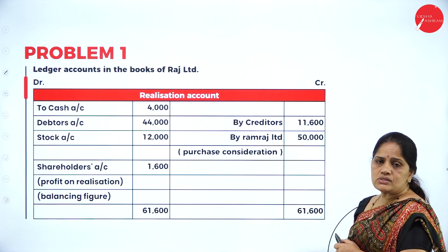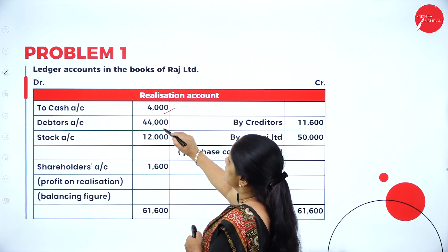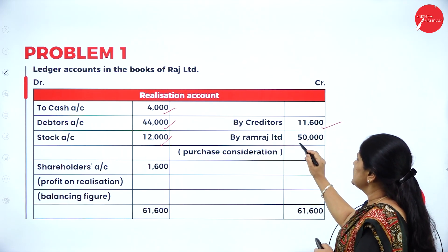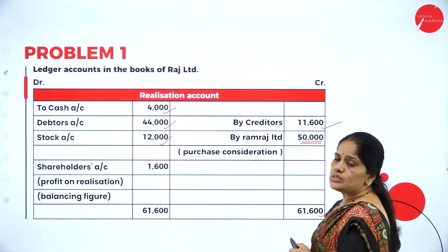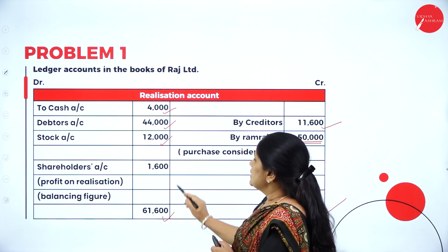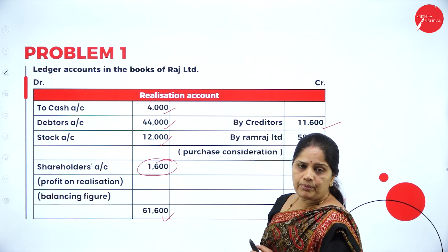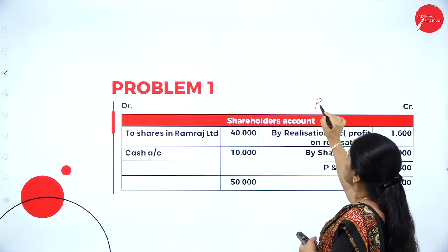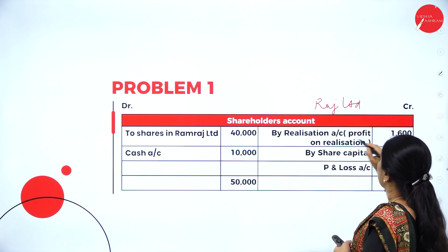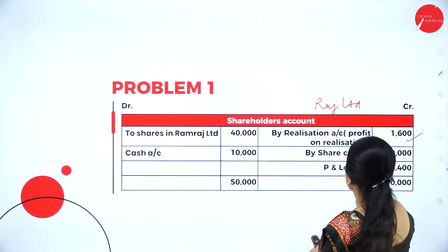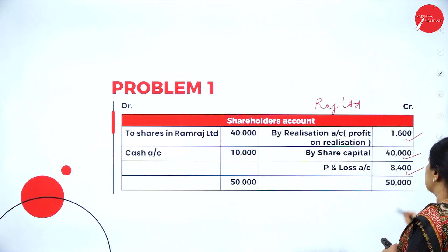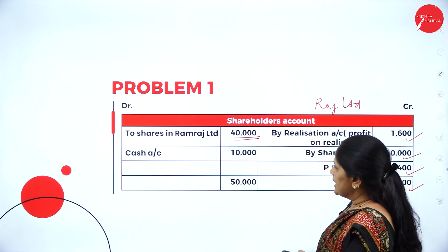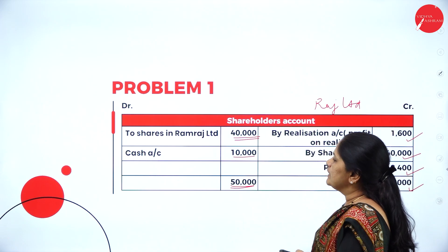Next, the ledger accounts in the books of Raj Limited. In the realization account, we enter cash, debtors, and stock at their balance sheet values. There are creditors only as liabilities. The purchase consideration is 50,000, giving a total of 61,600, and the difference of 1,600 is the profit on realization. In the shareholders account, there is a realization profit of 1,600, share capital, and profit and loss account, totaling 50,000 — settled as 40,000 in shares and 10,000 in cash.